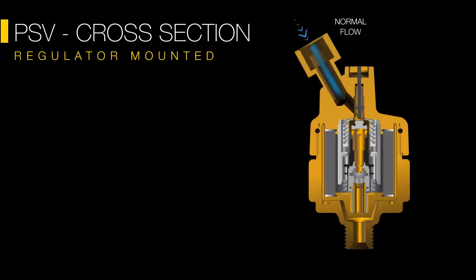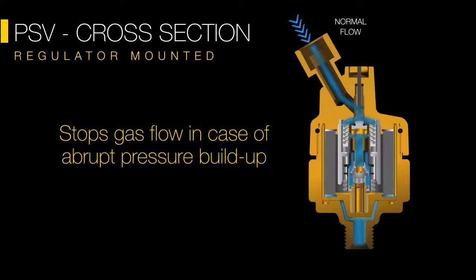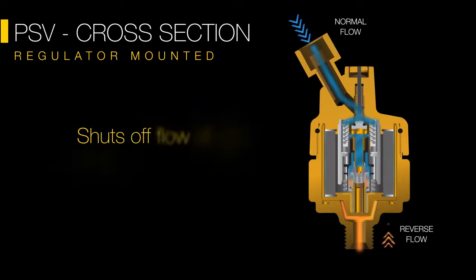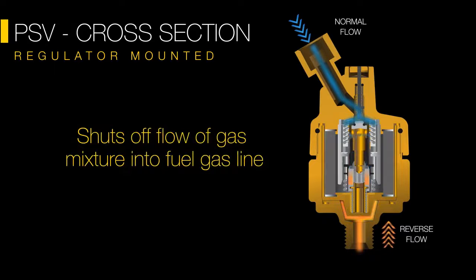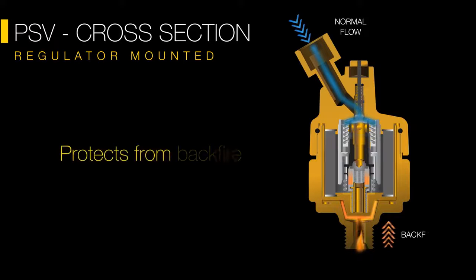The pressure sensitive cutoff valve allows free flow of gases as long as there is a stable pressure. The valve gets activated and cuts off flow in case of sudden pressure buildup. It shuts off and arrests gas flow, limiting the flame from spreading.